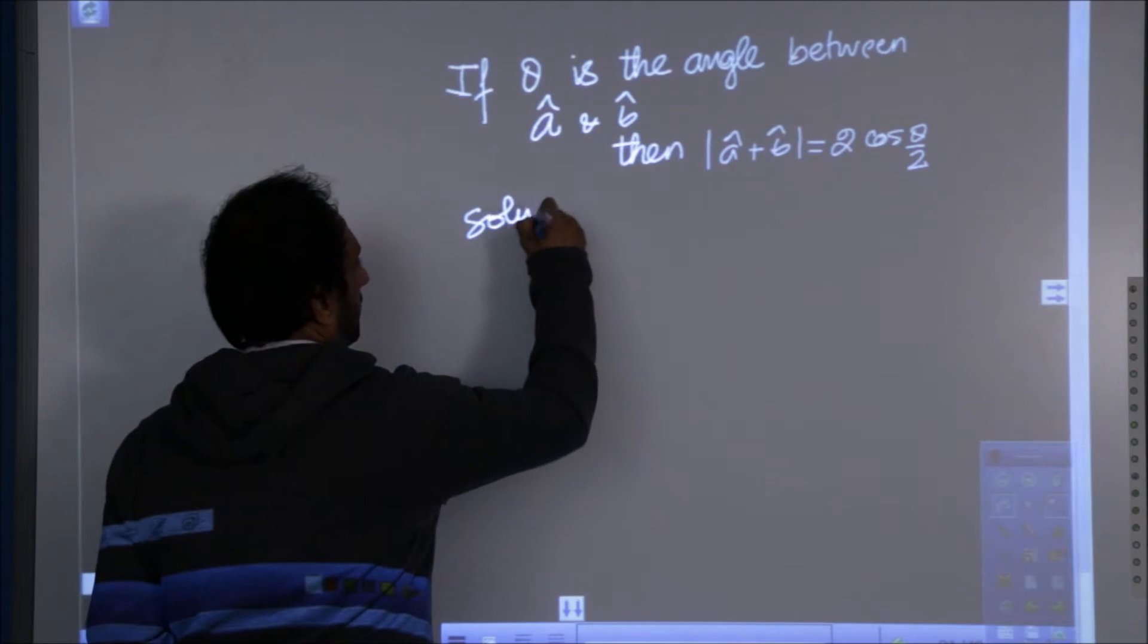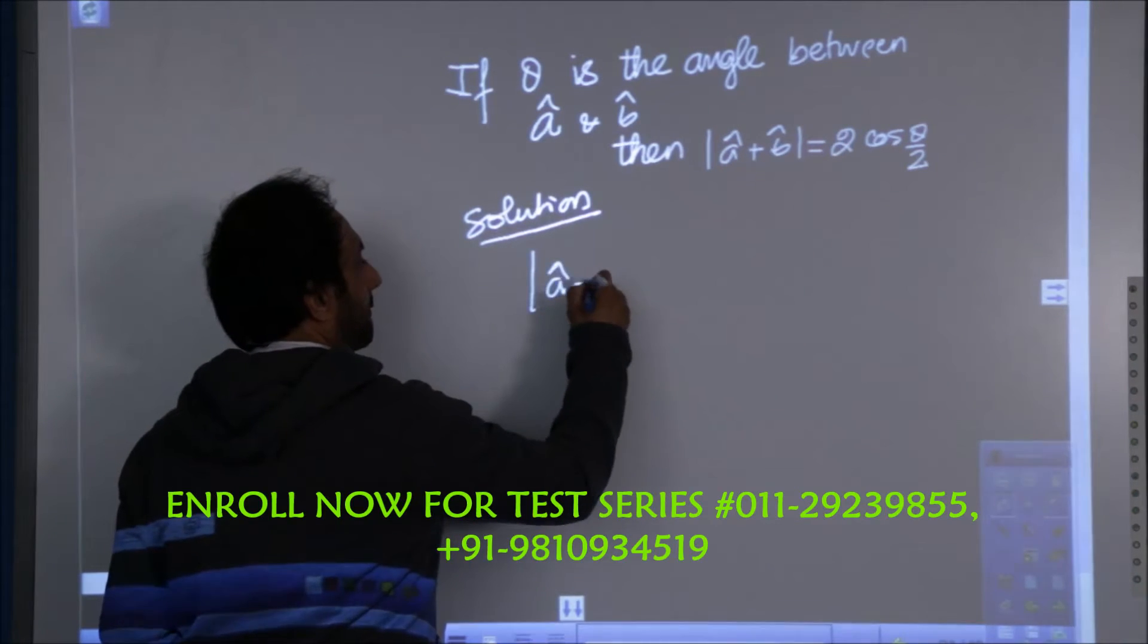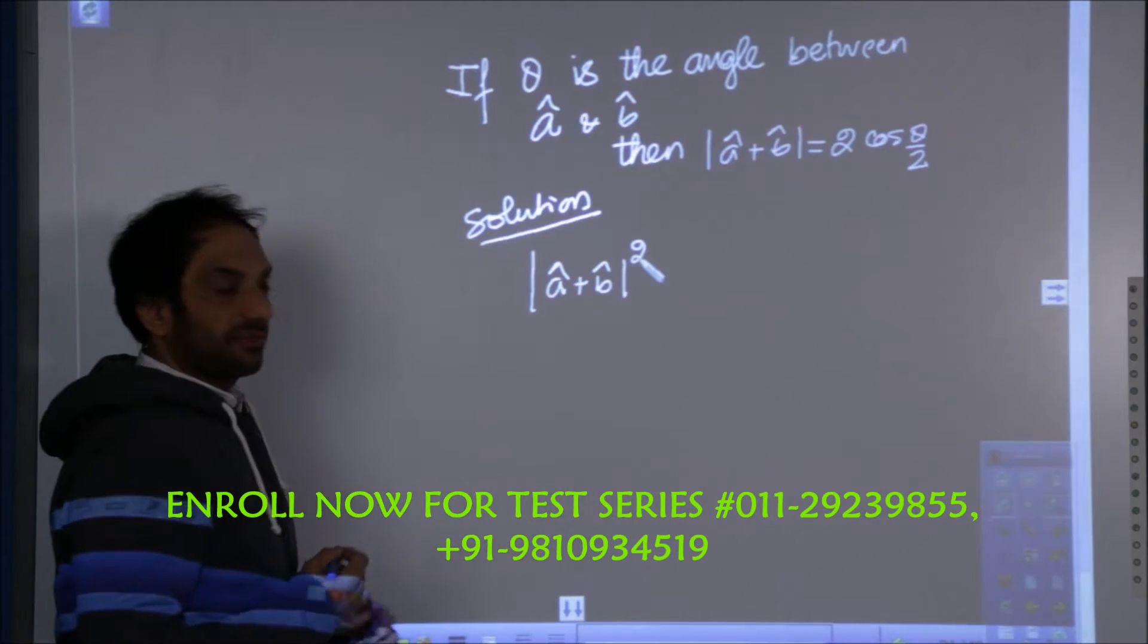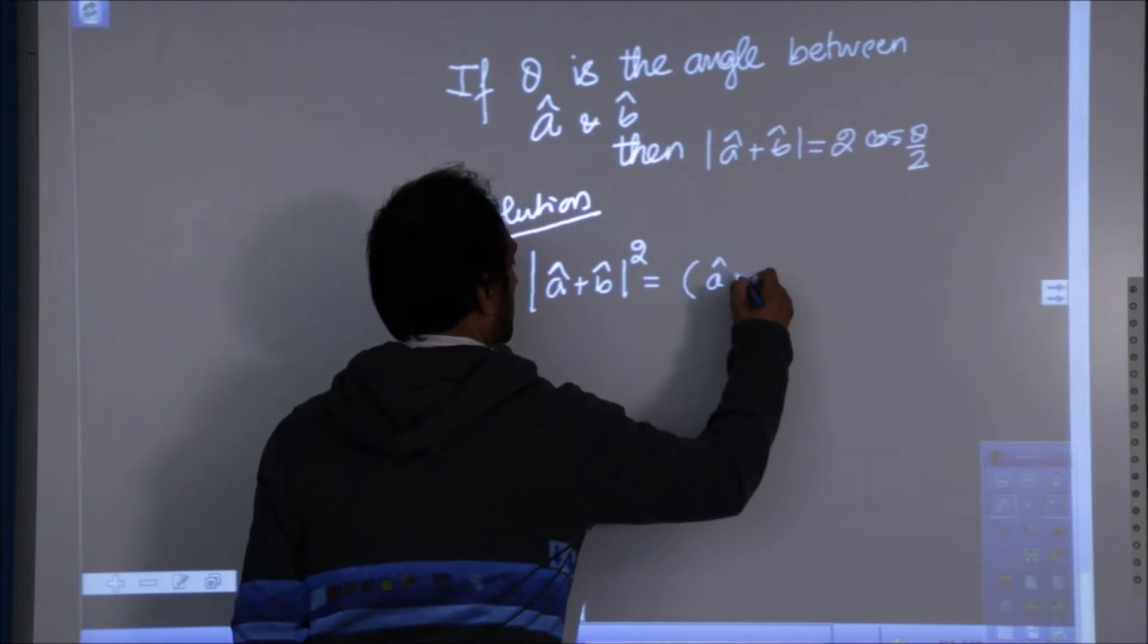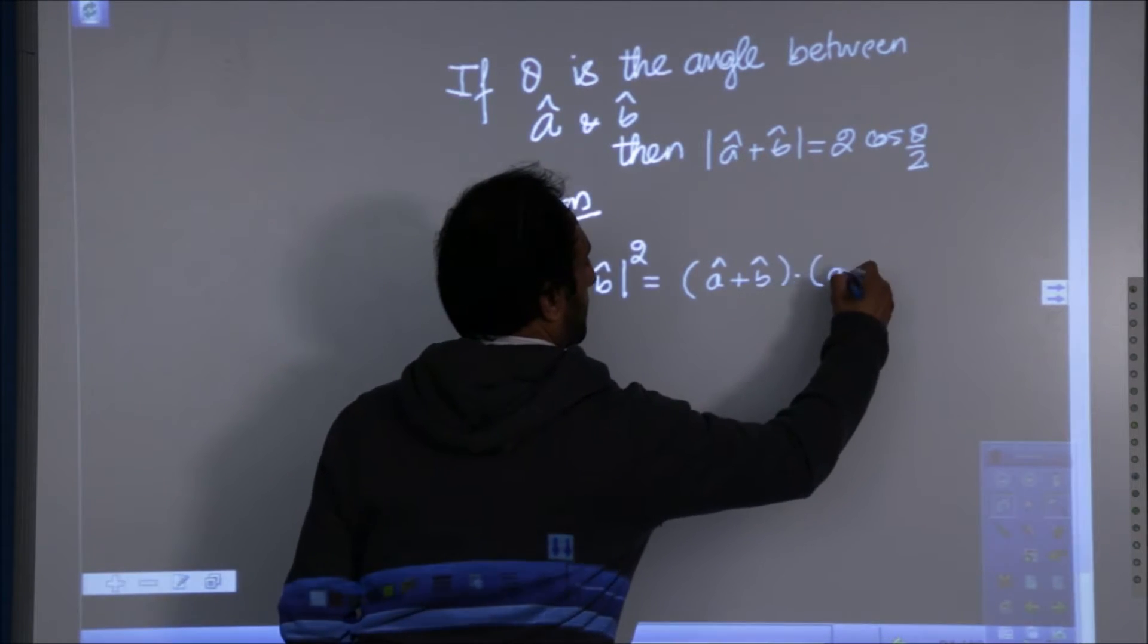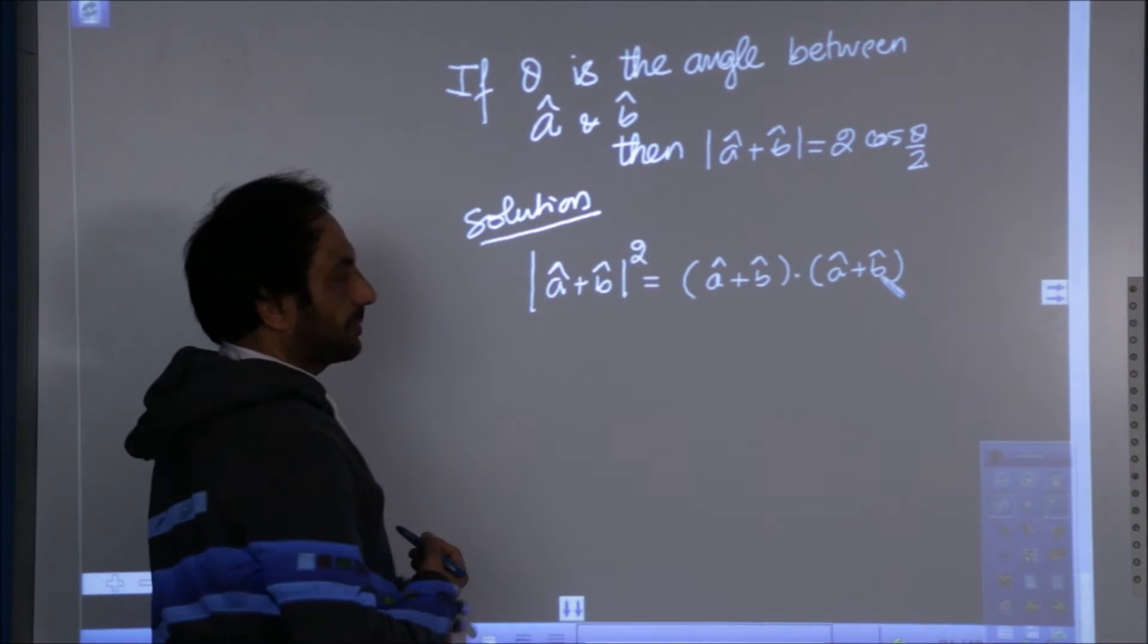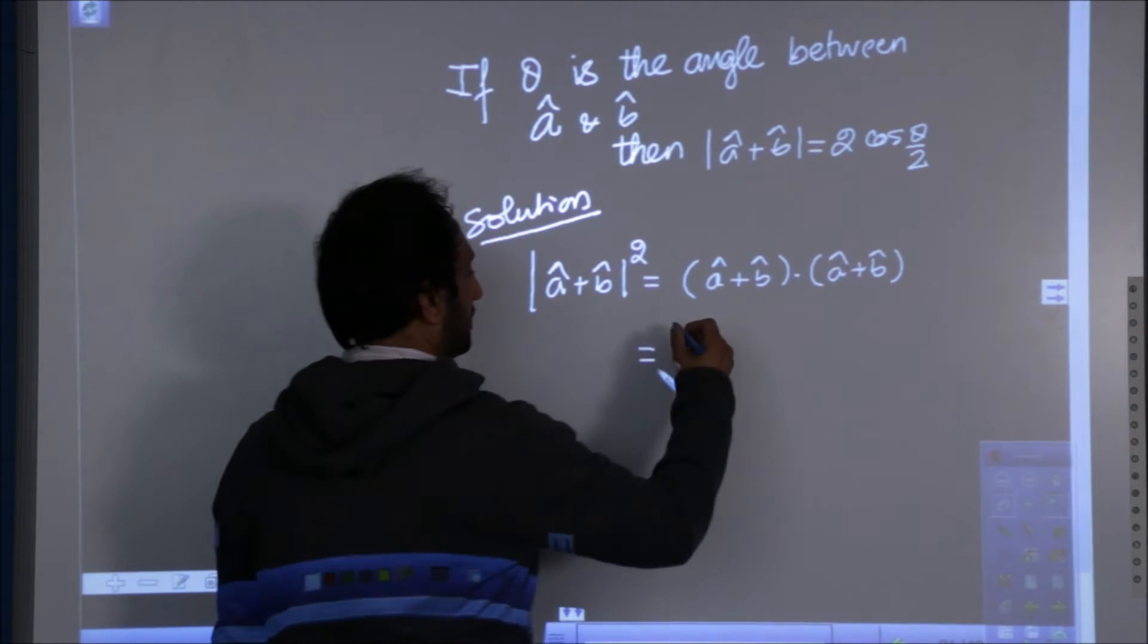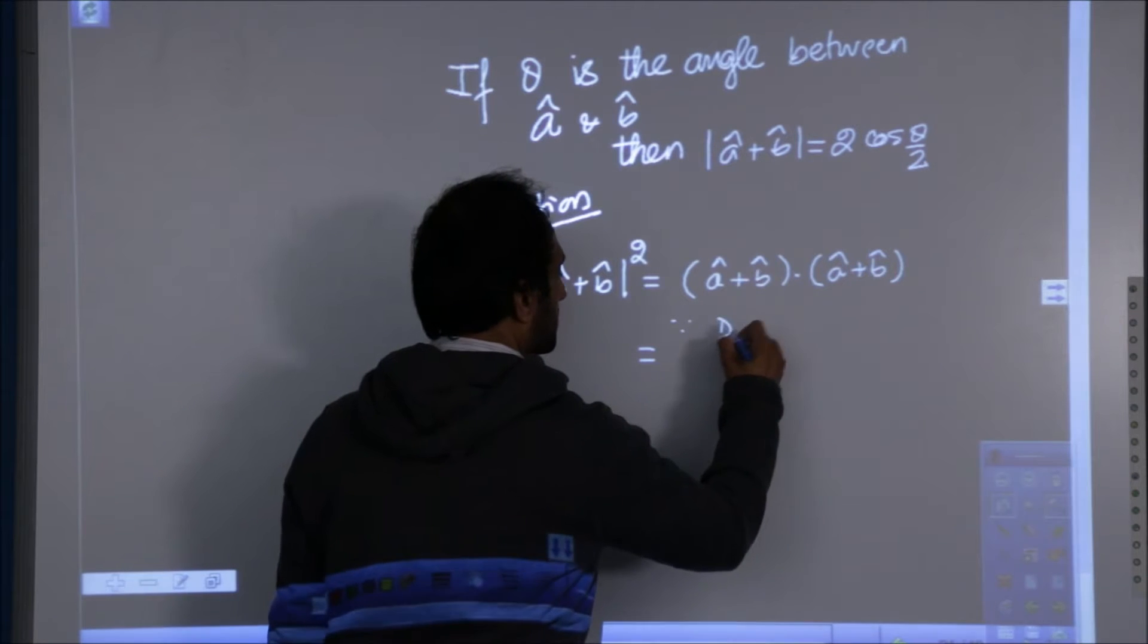In this question we begin with squaring the sum of the magnitude. Now this will result in this using the basic property. Now, using the distributive law,